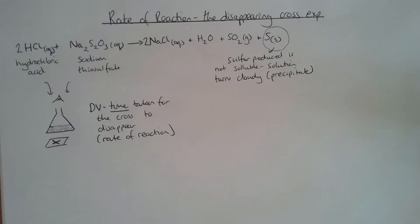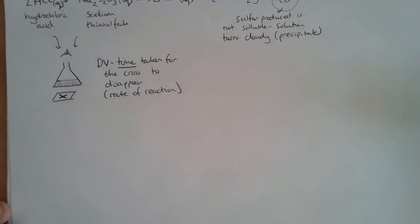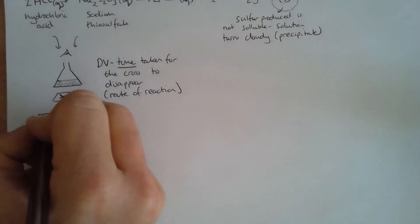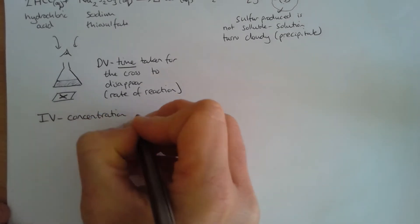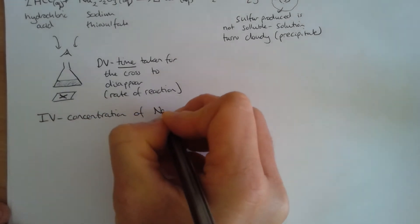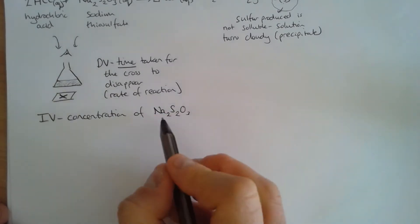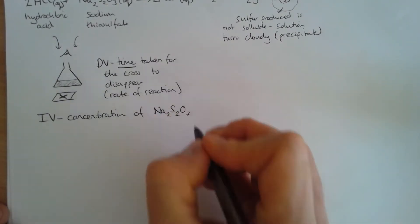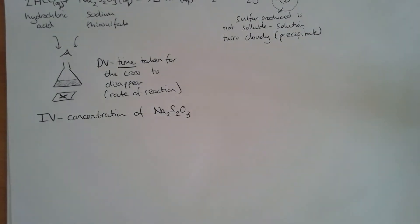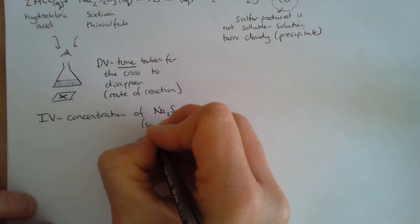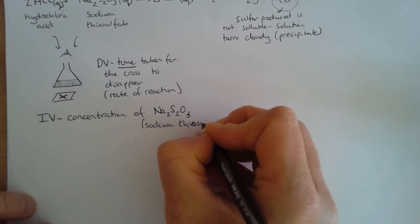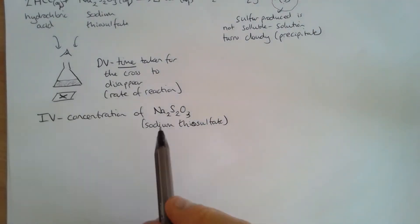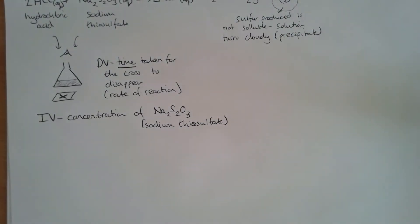Now let's think about the independent variable. In this experiment, the independent variable is going to be the concentration — specifically the concentration of sodium thiosulfate, Na₂S₂O₃. From now on I'll be using the symbol Na₂S₂O₃ for sodium thiosulfate.